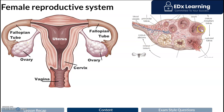In this close-up of the ovary, you can see it consists of multiple follicles. Through the action of hormones, these follicles mature and eventually they'll be ready for release of the ova.